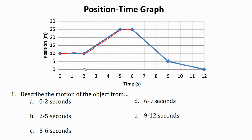Let's look at the first section, between zero and two seconds — that's one leg. Between zero and two seconds, my position from home is 10 meters. If my position stayed the same between zero and two seconds, did I move anywhere? No. You're basically being still, stopped, not moving. So number one: describe the motion from zero to two seconds — you are stopped, motionless. You remain in the same position away from home for two seconds.